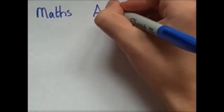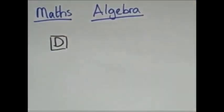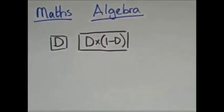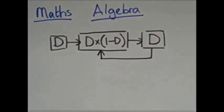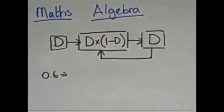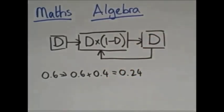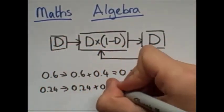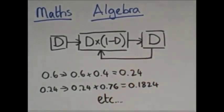For those more interested in maths, you can do this using algebra. We're going to use a flowchart that says, start number d, d times 1 minus d, and then this gives us our new value of d. Now d has to start off as a decimal, so we'll start as 0.6, so that's 0.6 times 0.4 which is 0.24. Then 0.24 times 0.76 is 0.1824, and so on. You can see that it's rapidly decreasing towards 0.